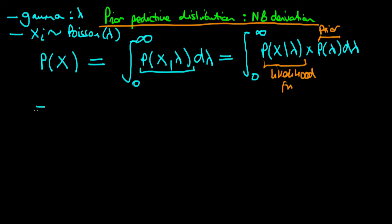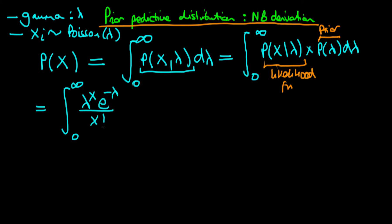What we can do is replace each of these terms by their corresponding mathematical formulae. So we get the integral from 0 to infinity of the likelihood, which is just lambda to the power x times e to the power minus lambda, all divided through by x factorial.